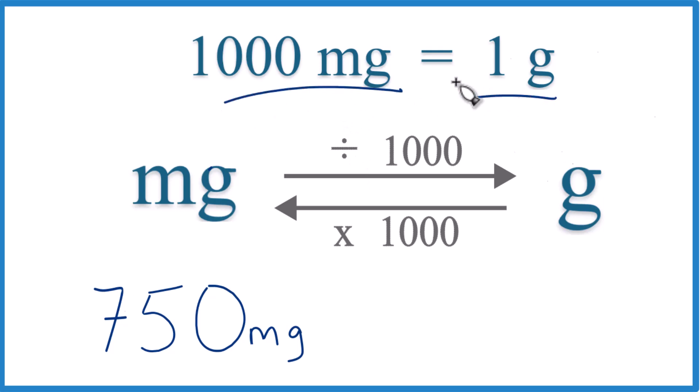So a thousand milligrams, that equals one gram. There are a thousand milligrams in one gram. This is something good to memorize. It's called a conversion factor. We need it when we're going from milligrams to grams or grams to milligrams.